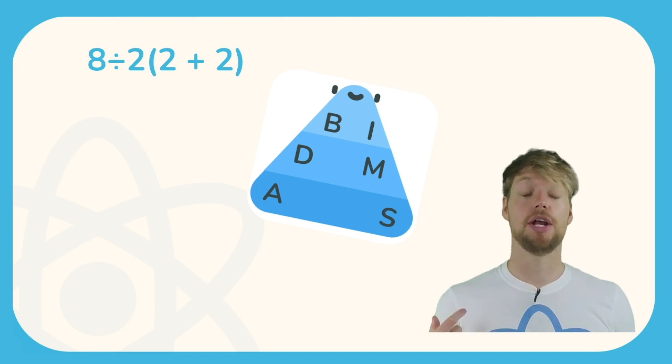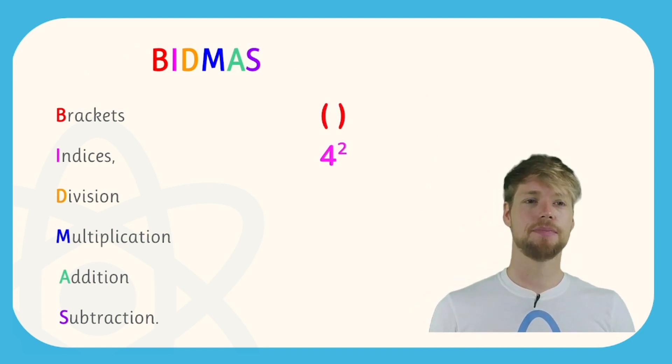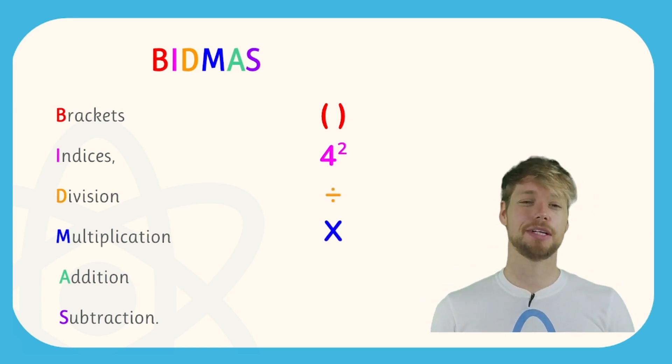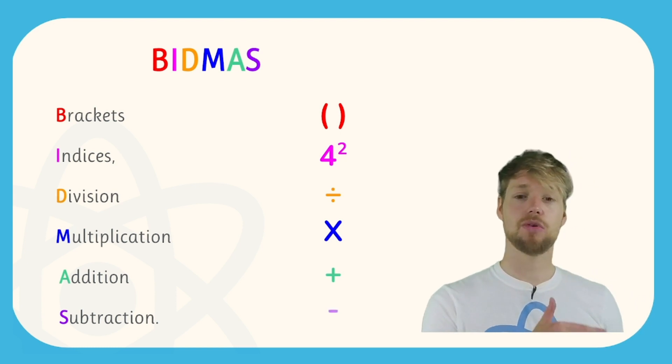What does it stand for? B stands for brackets, I stands for indices, D stands for division, M stands for multiplication, A stands for addition, and S stands for subtraction. So that's what BIDMAS stands for.